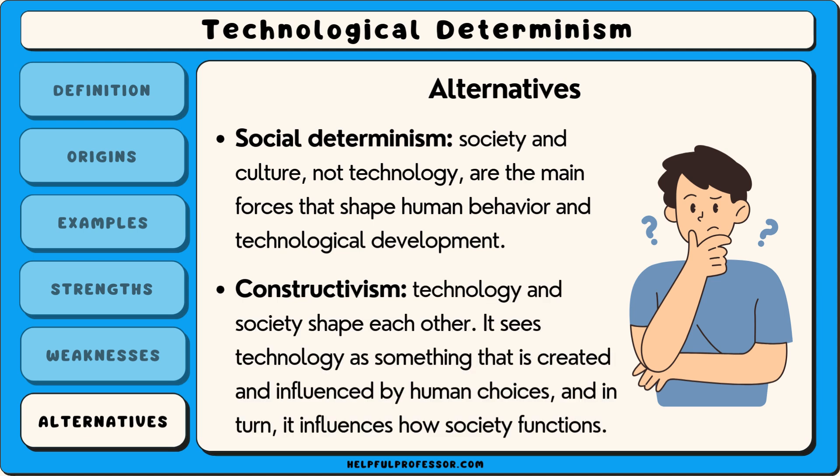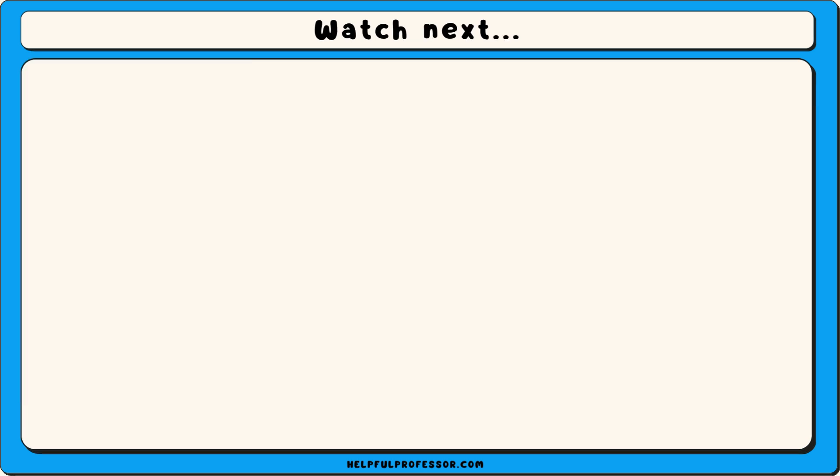Constructivism, on the other hand, argues that technology and society shape each other. It sees technology as something that is created and influenced by human choices, and in turn it influences how society functions. These alternatives offer more nuanced explanations of how society and technology interact, suggesting that technological changes are not the only factor driving social evolution. To learn more about constructivism, watch this video now.